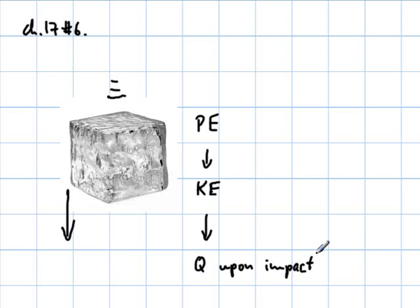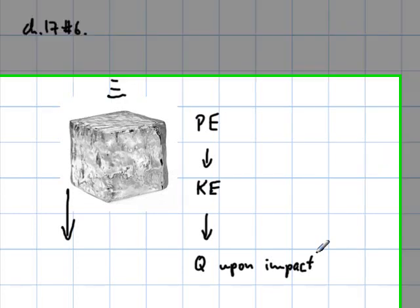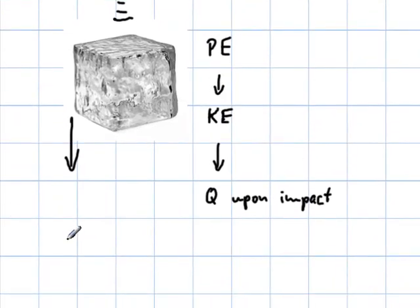In the previous problems, it was given as 80 calories per gram. Here's the SI unit of 335,000 joules per kilogram. So capital L instead of 80 calories per gram, here it is 335,000 joules per kilogram. Actually, same number, just different units. That's why it looks different.